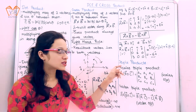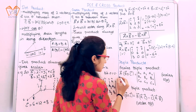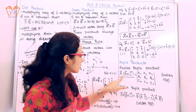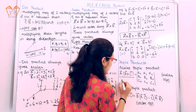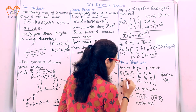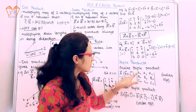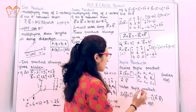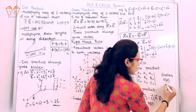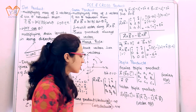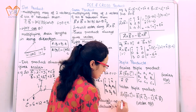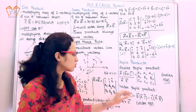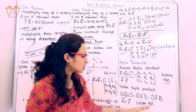Now the last part: triple product. Scalar triple product is represented as a⃗ · (b⃗ × c⃗), solved using a three-order determinant with coefficients of A, B, and C in the rows. Since these involve vectors, the resultant output is a scalar. Vector triple product is the cross product a⃗ × (b⃗ × c⃗), and its output will be a vector. So scalar triple product gives scalar output and vector triple product gives vector output.